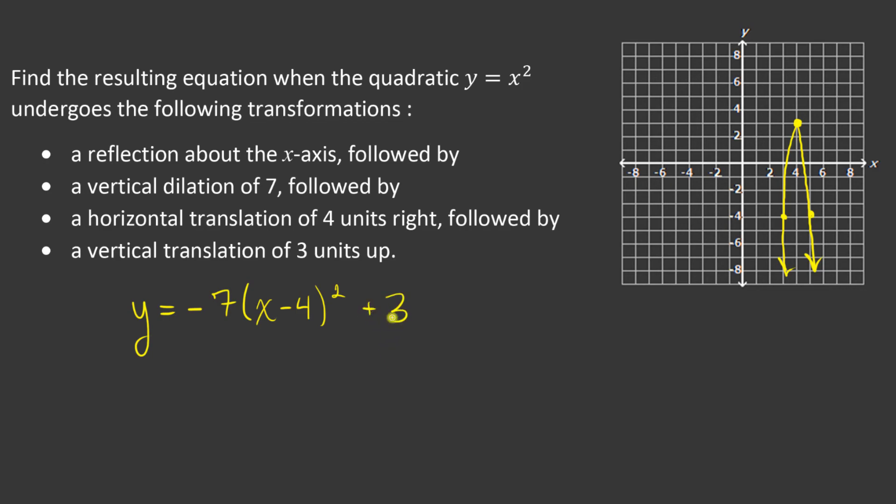And so this one, my k value at the end is positive three. Whereas in the previous one, multiplying the entire equation by that negative caused my k value to be negative three. And that is the confusion that tends to surround reflecting quadratics over that x-axis.